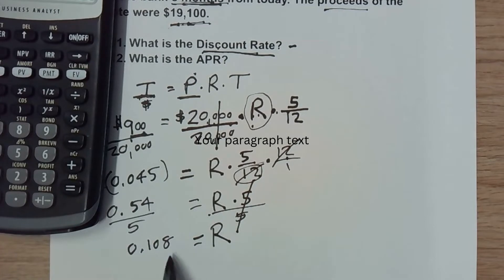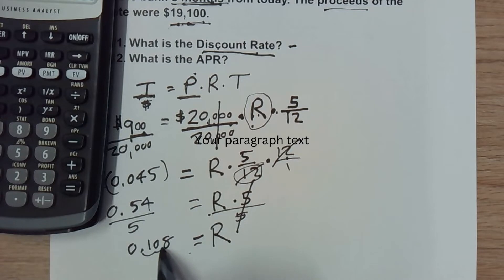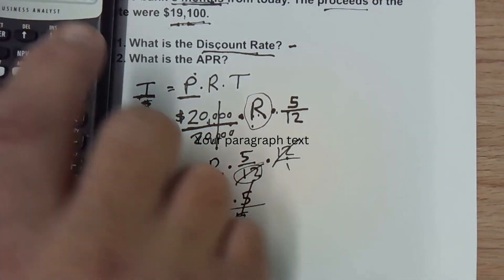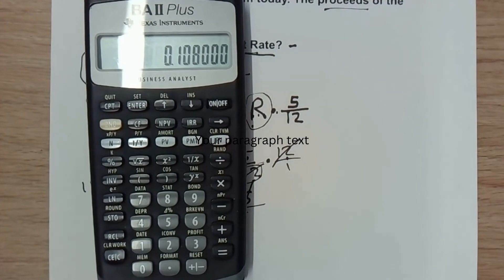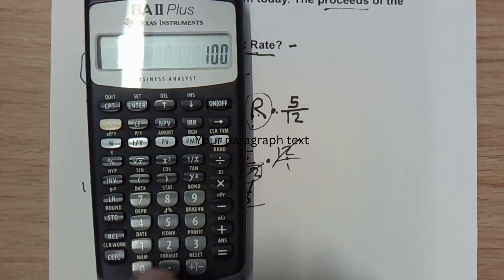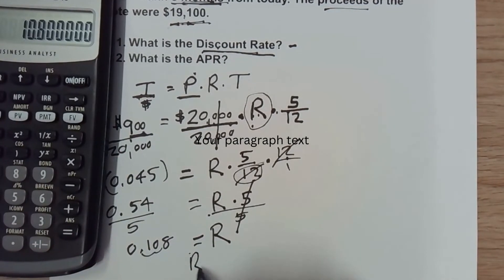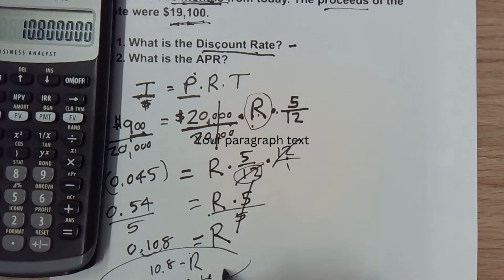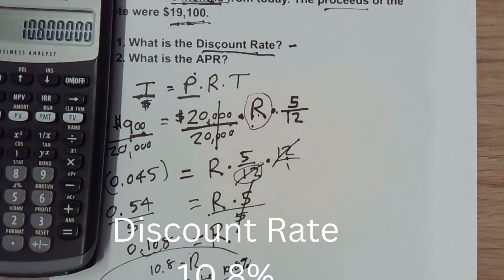To convert the decimal to a percentage, we multiply by 100, which is the same as moving the decimal point two places to the right. So the rate is 10.8. That gives us a discount rate of 10.8%. That's the simple interest rate being paid.